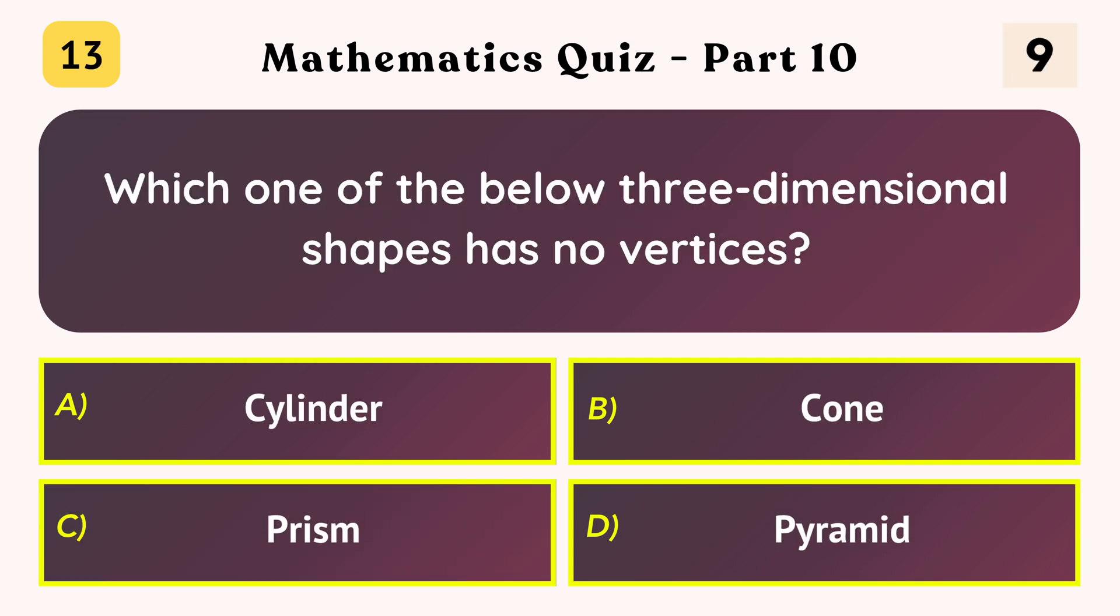Which one of the below three-dimensional shapes has no vertices? Cylinder.